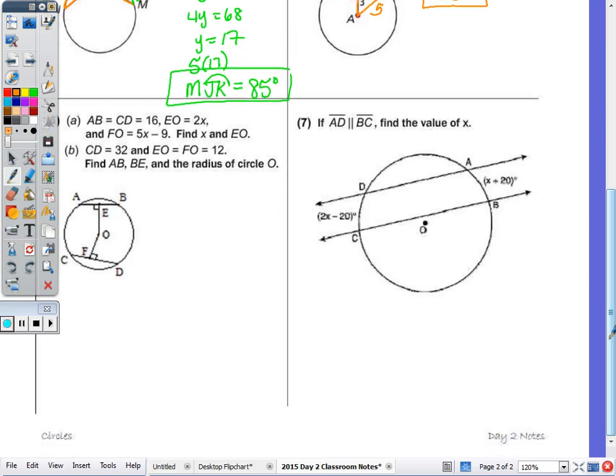6 and 7. Well, let's take a look at 7 first. So it says, if AD is parallel to BC, find the value of X. And we know parallel lines are equidistant, so arc CD is congruent to arc AB. So 2X minus 20 equals X plus 20, their measures are equal. Subtract the X, add the 20, we get X equals 40.